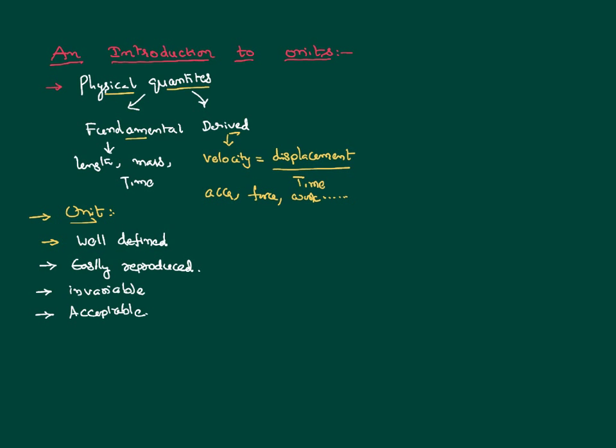Taking this into consideration, there are broadly different kinds of systems of units. We have the FPS system, where to measure the length we use feet, to measure the mass we use pounds, and to measure the time we use seconds. We also have CGS units, where to measure the length we use centimeters, to measure the mass we use grams, and to measure the time we use seconds.